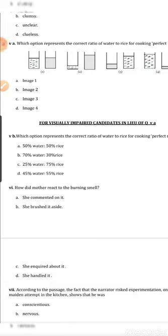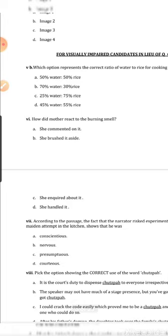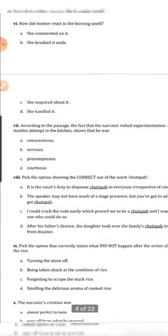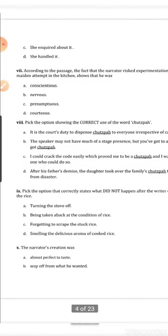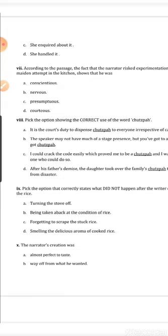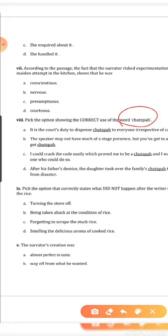Question 5b is for visually impaired candidates only — not for the rest of you. Question 6 — 'How did mother react to the burning smell?' — a very direct and easy question. Question 7 — about the narrator risking experimentation on his maiden attempt — also a direct question. Question 8 — 'Pick the option showing the correct use of the word' — referring to a specific word from the passage, this is a very interesting and puzzling question.